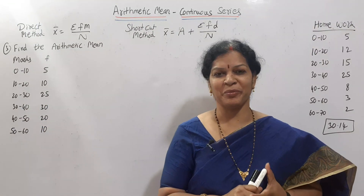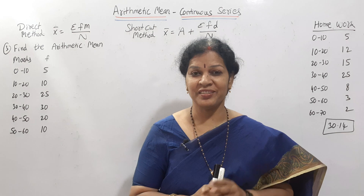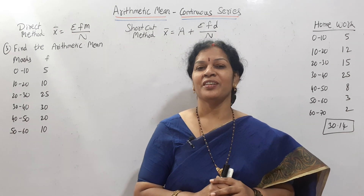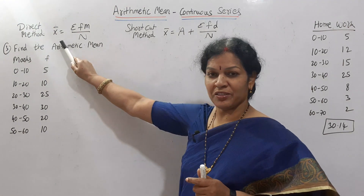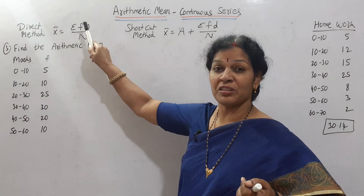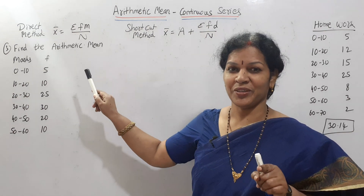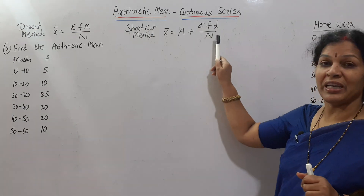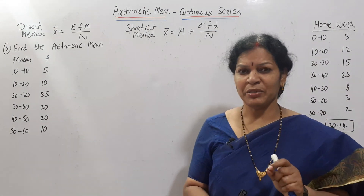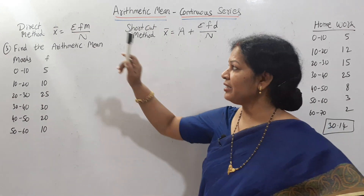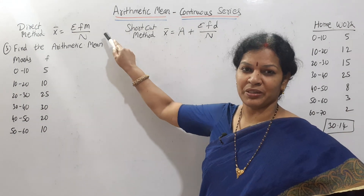Hello dear students, welcome to Evika's Commerce and Management Academy. Today we will see arithmetic mean for continuous series. If you are perfect in individual and discrete series, then only come to this continuous series. Remember the formula for continuous series: direct method — X̄ = σfm / n. In discrete series it was σfx / n, so fx turns into fm. The shortcut method is A + σfd / n. Remember these two formulas.